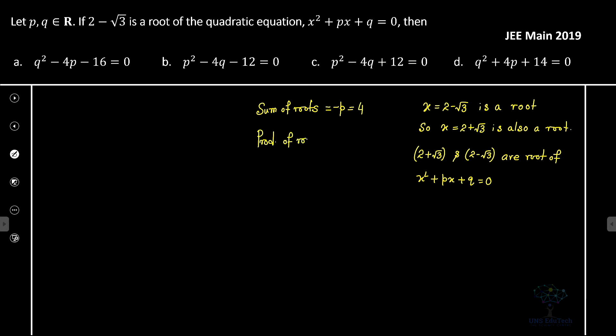The product of the roots, for the product of the roots it's definitely c by a, so it's q and that is 2 plus root 3 and 2 minus root 3. So therefore we'll find that in this particular case that equals 4 minus 3 and that equals 1.